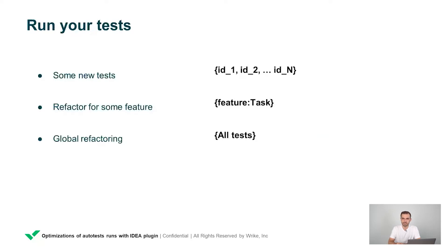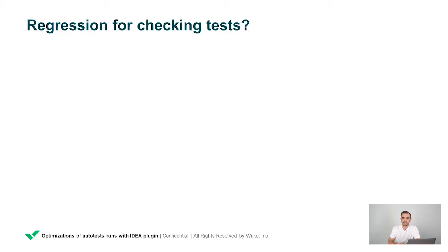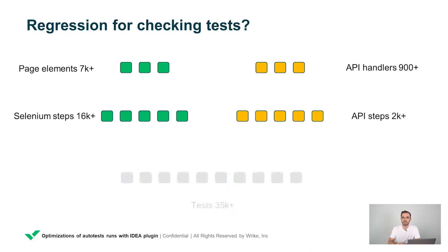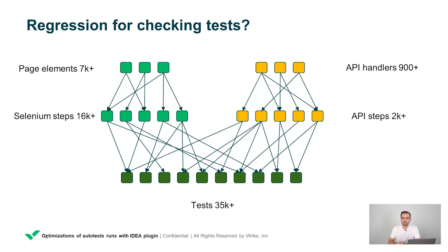But reality is often disappointing. Let me show you how giant our project is. From the front-end side, we have 7,000 page elements used in 16,000 Selenium steps. From the back-end side, we have 900 API handlers used in 2,000 API steps. And finally, we have 35,000 tests that use everything above. The dependencies between these layers are very complex.